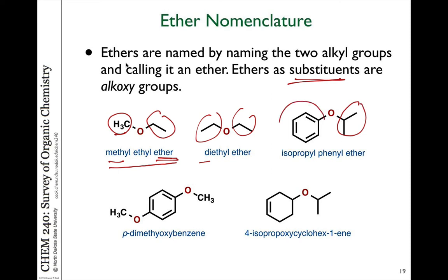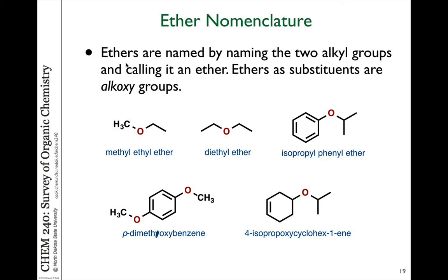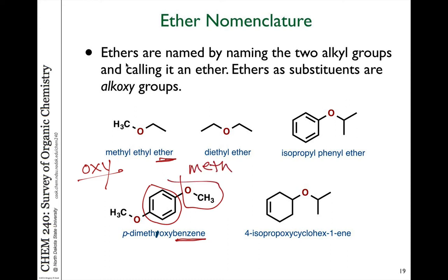Here's an example of isopropyl phenyl ether. We haven't talked about the naming for these kinds of groups yet, but that's a phenyl group. If you have an ether as a substituent on a larger molecule and you're not using the oxygen as the parent name, we simply take the -yl ending of the substituent and add -oxy to refer to the substituent as containing the oxygen. So in this case we have benzene as the parent molecule and attached to that is a methoxy group. This would be referred to as methoxy, referring to the methyl group attached to an oxygen. There are two of them, so we refer to this as a dimethoxybenzene molecule.